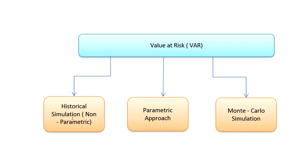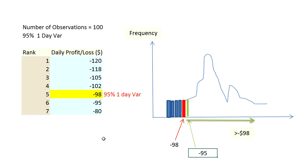The three approaches are: the first one is called historical simulation, we can also call it non-parametric; the second one is the parametric approach; and the third one is Monte Carlo simulation. Historical simulation is by far one of the most used methods to calculate VaR — almost all the banks I've worked in use historical simulation extensively.